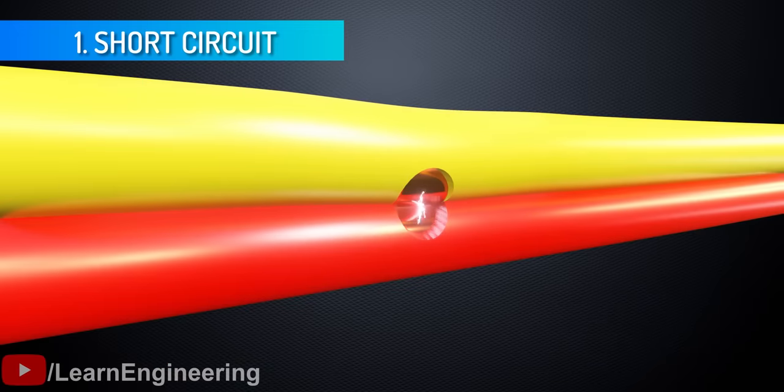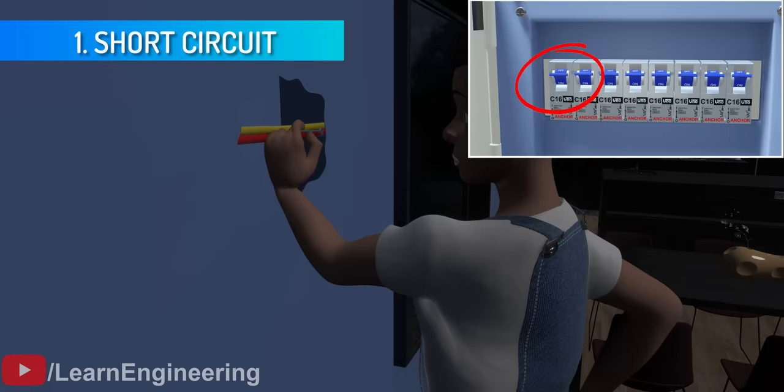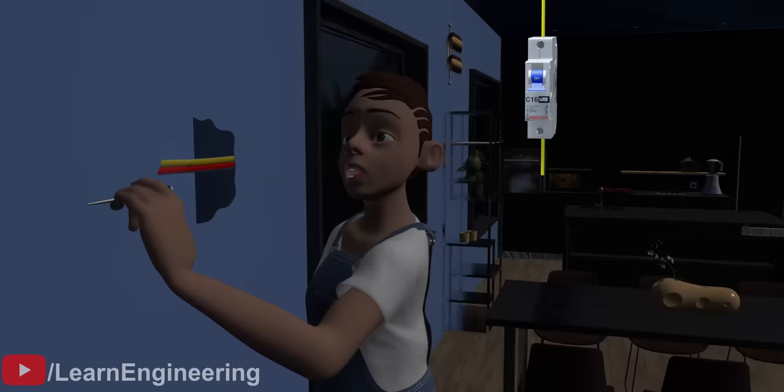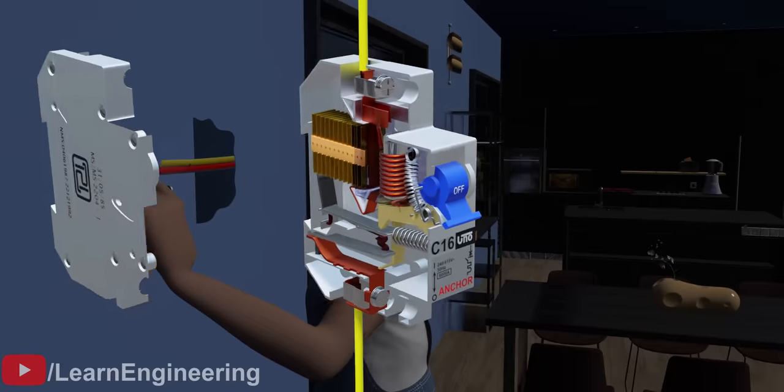In a short-circuit scenario, the MCB trips in less than 3 milliseconds and isolates the internal connections. Let's see how this smart device detects current chaos so quickly and precisely.